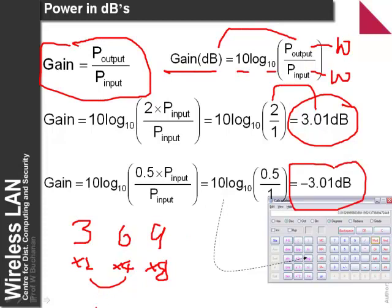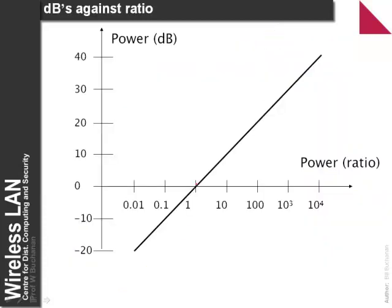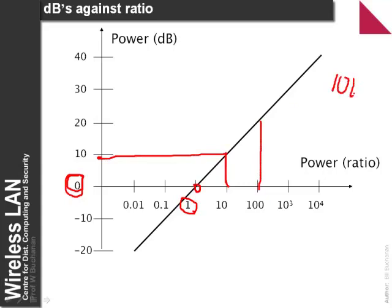We can plot this as a logarithmic scale. A power ratio of 1 — same power out as in — gives 0 dB. A ratio of 10 gives 10 dB. A ratio of 100: log base 10 of 100 gives 2, times 10 gives 20 dB. A ratio of 1000 gives 30 dB. Conversely, 0.1 gives minus 10 dB, and 0.01 gives minus 20 dB.